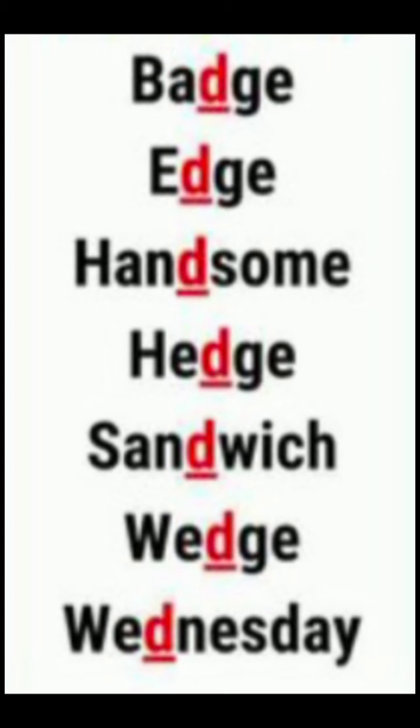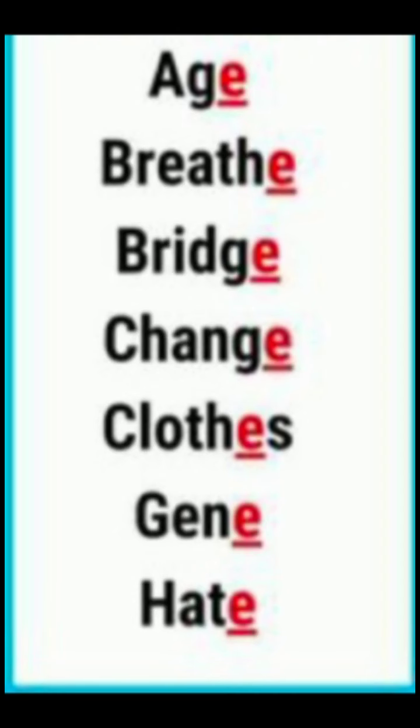Silent D — it is a consonant. Whenever you find G and E before D, in that case D will be silent. Examples: badge, handsome, sandwich, Wednesday.